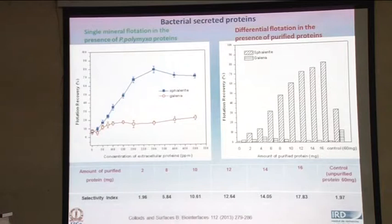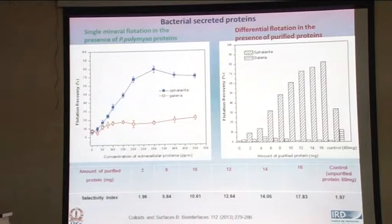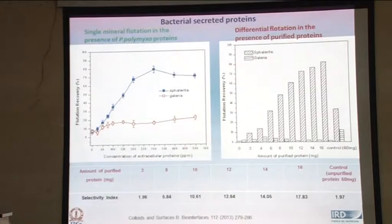When you do the isolation of the protein from the metabolite, you can see that in the absence of the purification protocol, the quantity of protein that has to be added is about 60 mg. Whereas, once you identify and purify the protein component, you can reduce the quantity required and get much better recoveries. The bottom table shows the selectivity index — there is almost a nine-fold increase in the selectivity index after using the purified proteins.